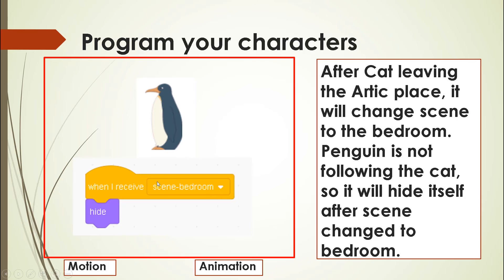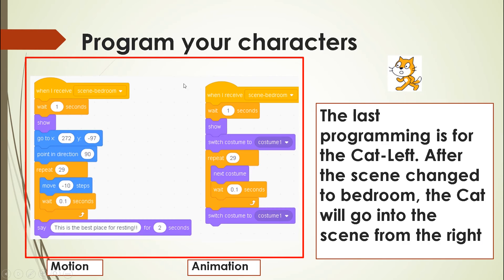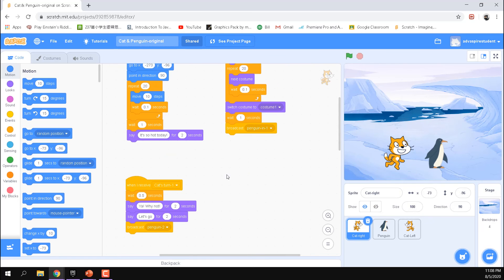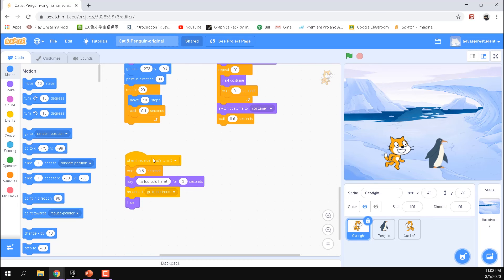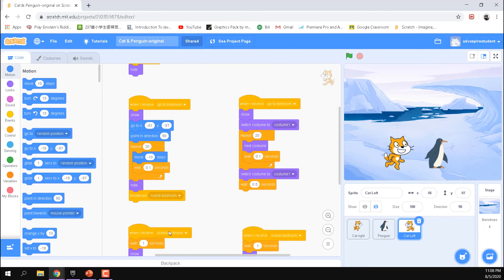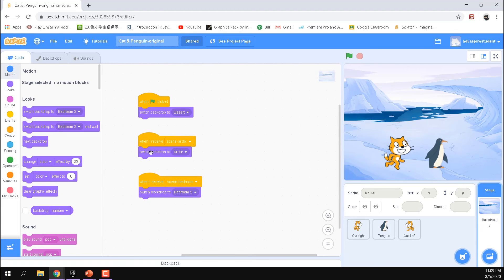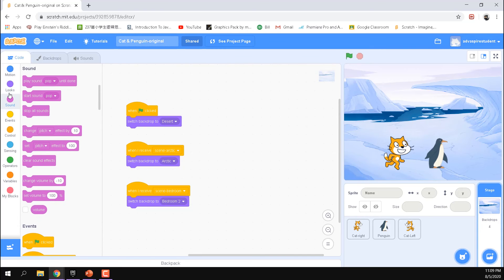When the scene changes to bedroom, the penguin hides itself since it's not following. The cat-left moves from the right to the left in the bedroom scene using point in direction 90 and negative X motion values — negative moves left, positive moves right. The backdrops are also programmed: at start it switches to desert, then switches to arctic when it receives 'scene arctic', and to bedroom for the final scene. Background music can be added yourself.